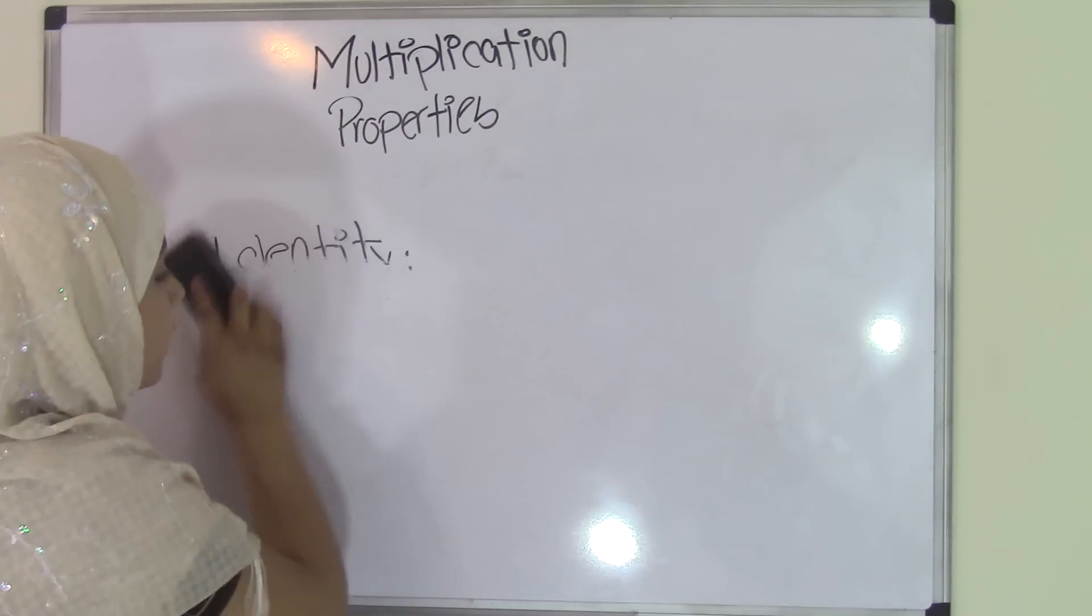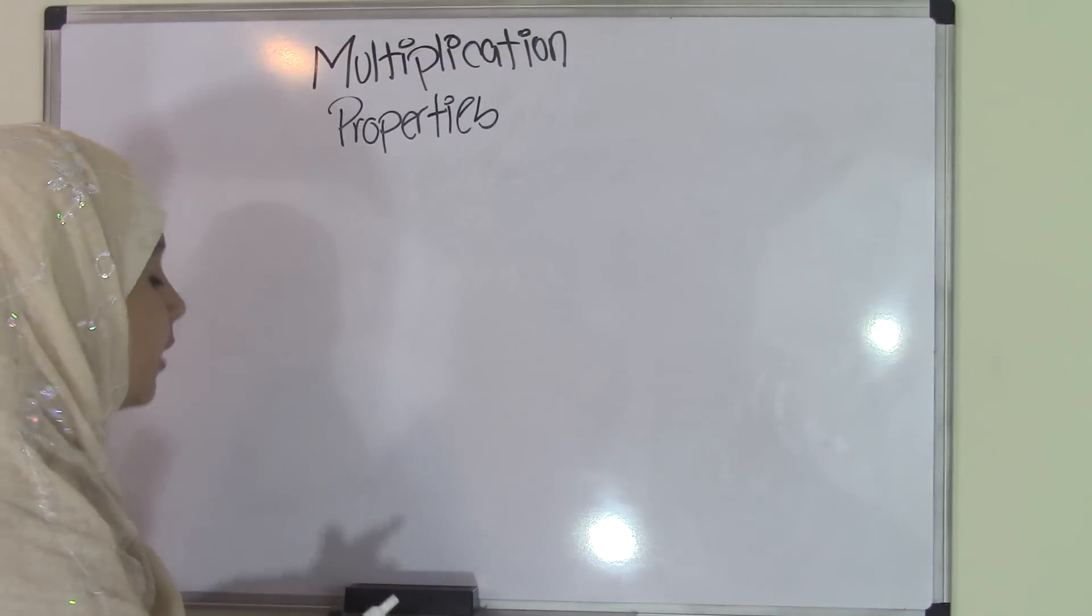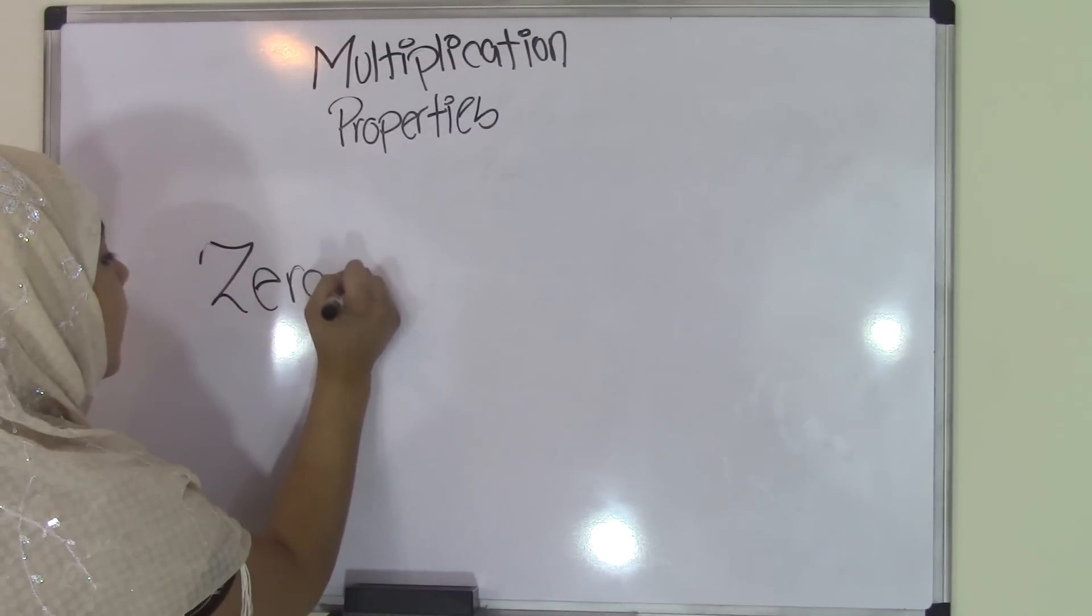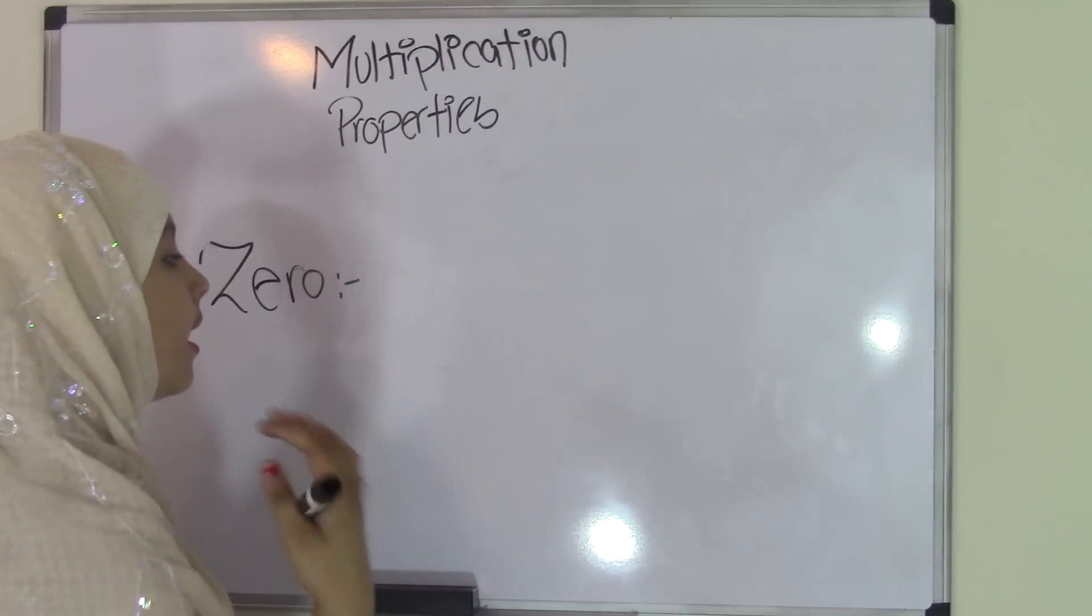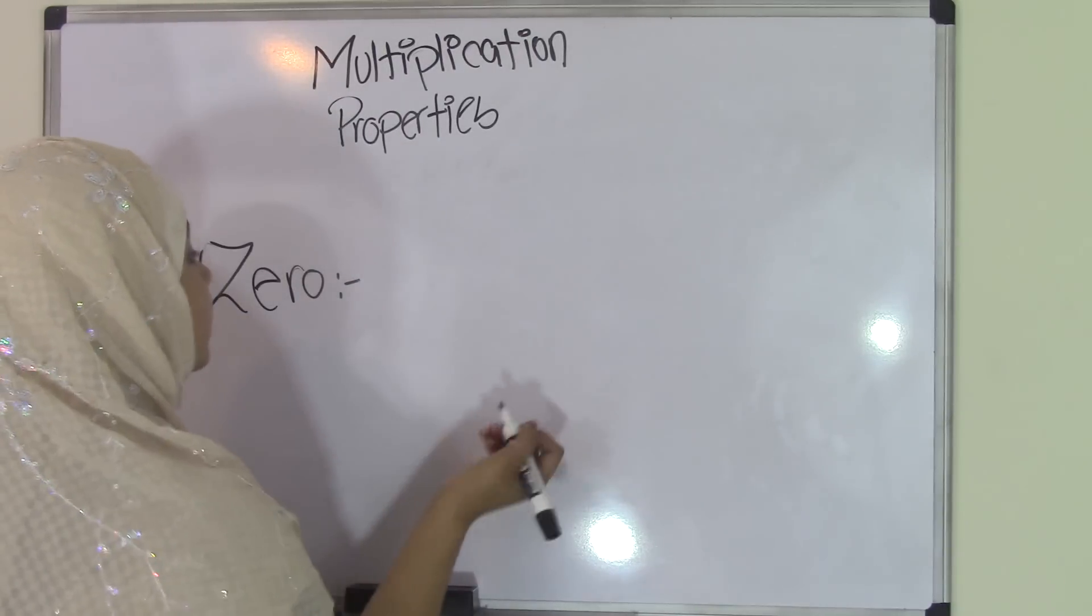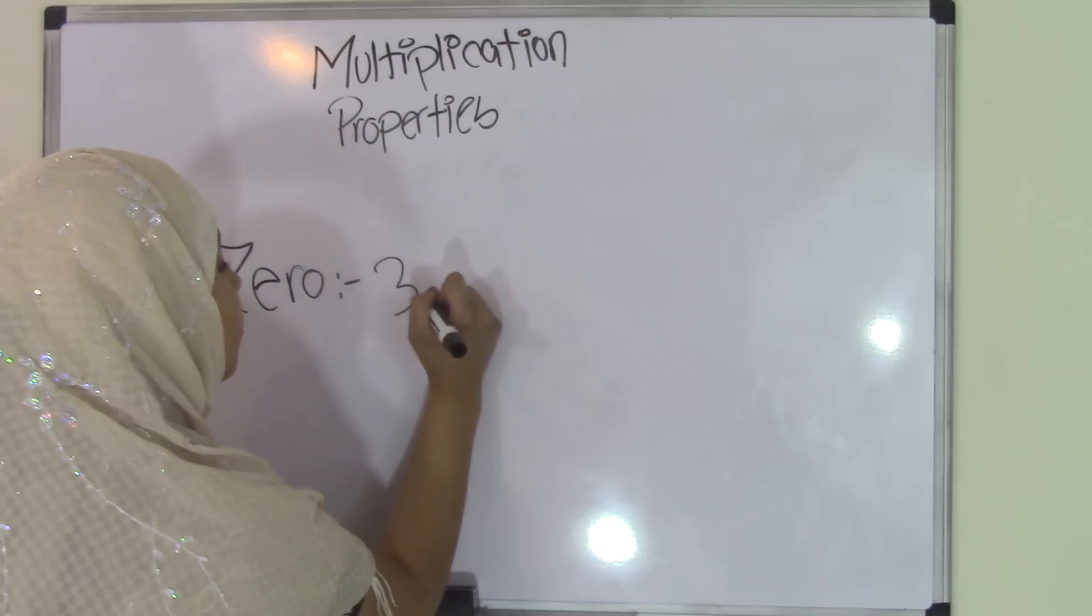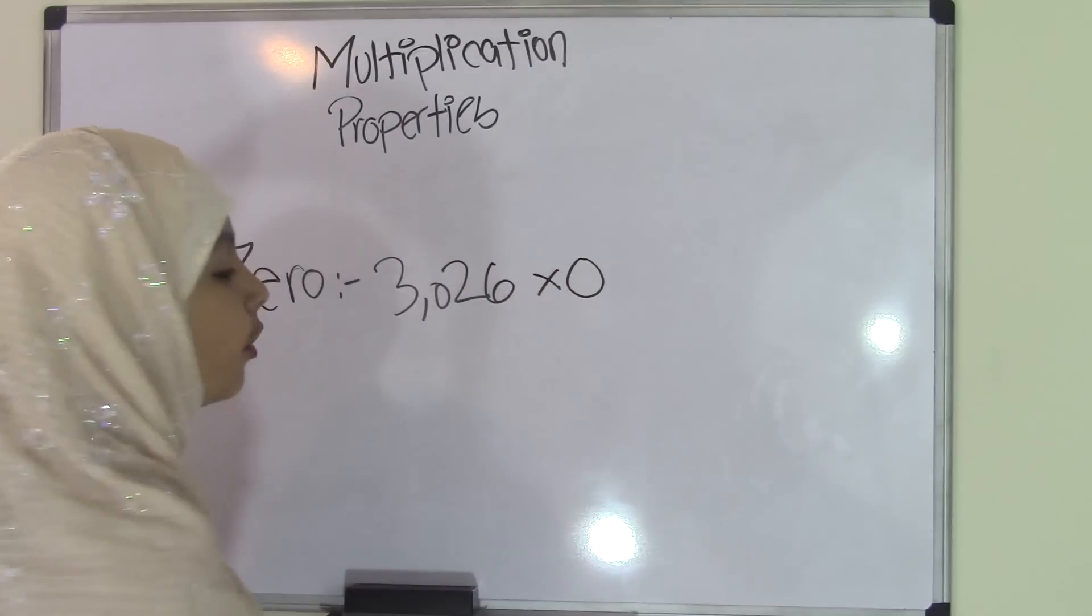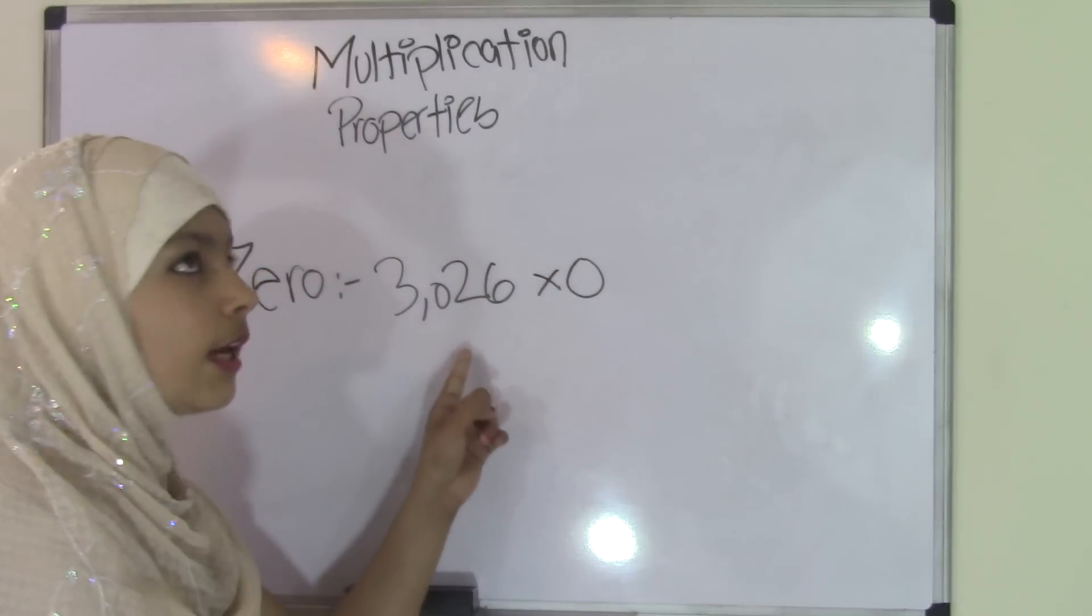The last but not least property of multiplication is the zero property. Now, the zero property has to do with zeros. So if you have, let's say, maybe a big number like 3026 times 0, no matter the value of 3026,